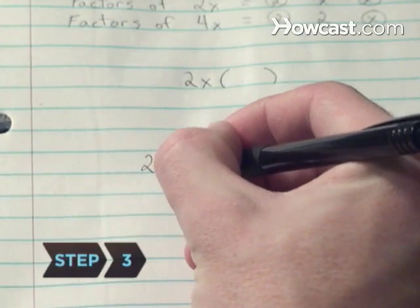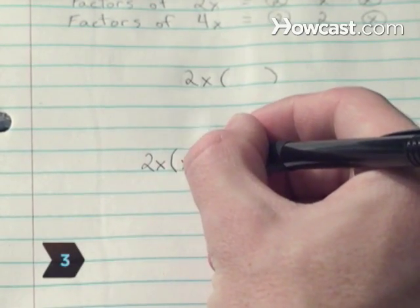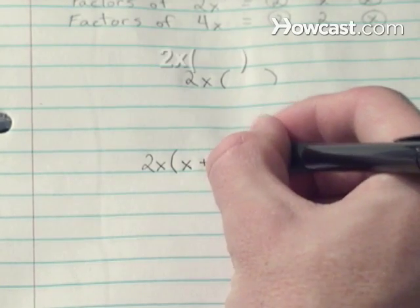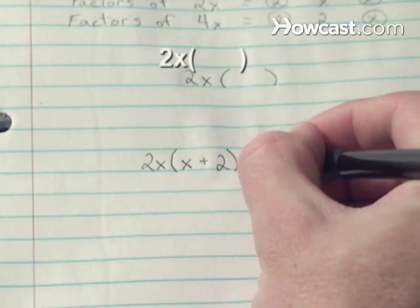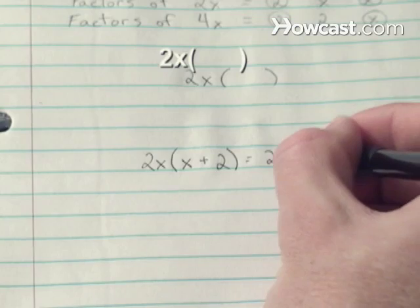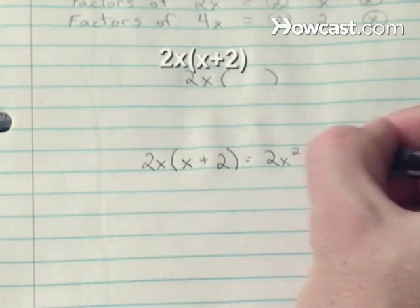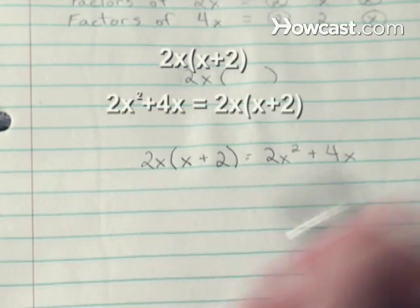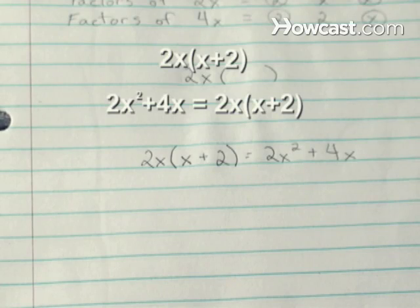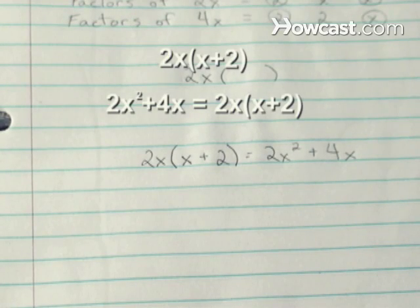Step 3: Determine the greatest common factor of each term of the expression. In the example, it's 2x. Then, determine what it's multiplied with to equal the original two terms and place those terms inside the parentheses. 2x times x equals 2x squared, and 2x times 2 equals 4x.